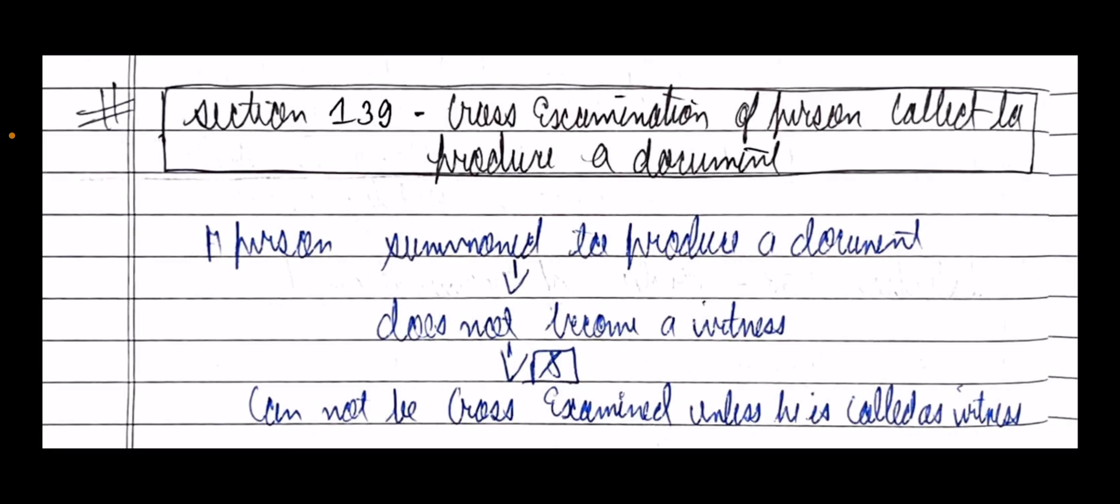Why not? Because he is just summoned to produce a document, but he is not considered as a witness. The person who is summoned to produce a document, if he is also considered as a witness, can be cross-examined.